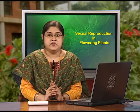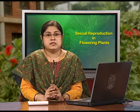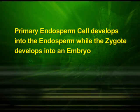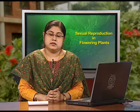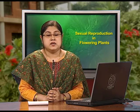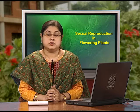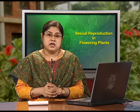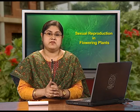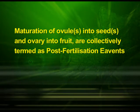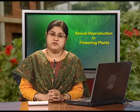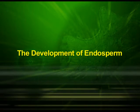You can observe a fertilized embryo sac showing the zygote and primary endosperm nucleus in this diagram. The central cell after triple fusion becomes the primary endosperm cell and develops into the endosperm, while the zygote develops into an embryo. After double fertilization, the events of endosperm and embryo development, maturation of ovules into seeds and ovary into fruit are collectively termed post-fertilization events. Let us first discuss the development of the endosperm.